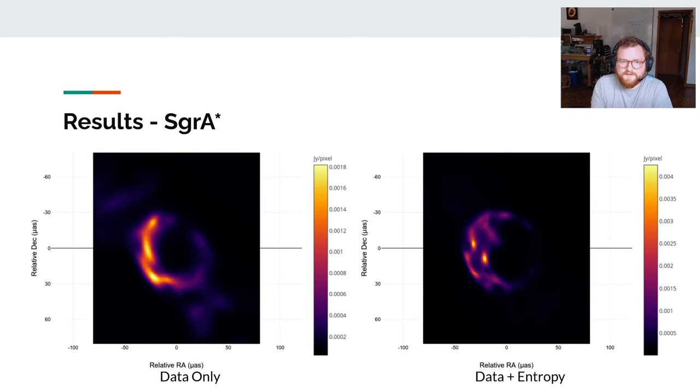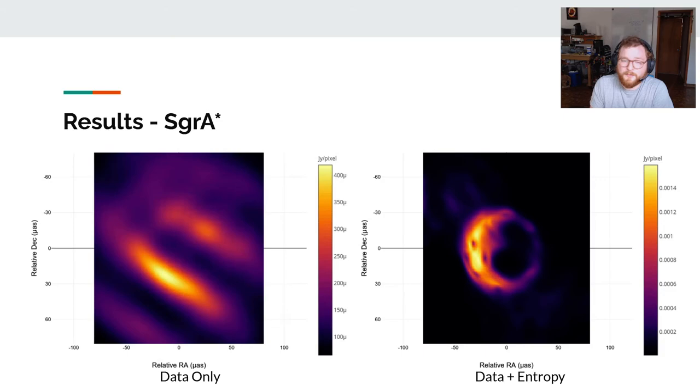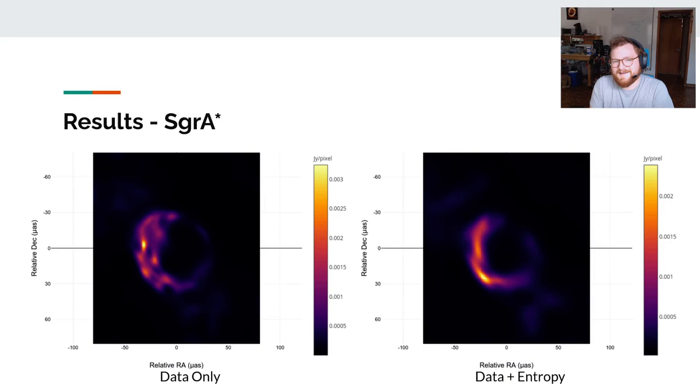We can actually watch this train. On the left is just the data term, so not even looking at entropy. And you can see we actually get close. This is with a Gaussian prior, and that helped more than just putting zeros in the places we don't know.